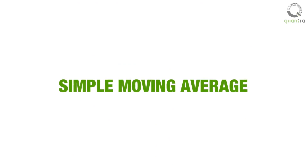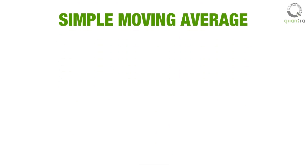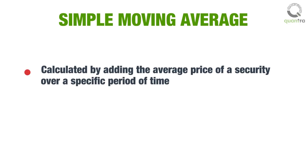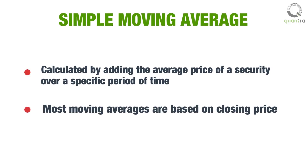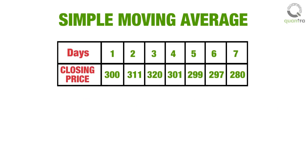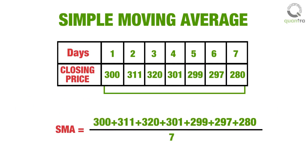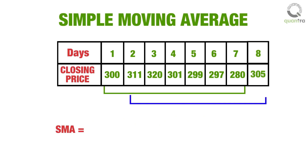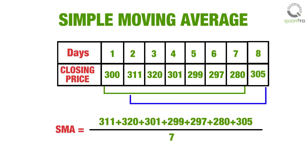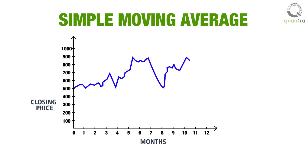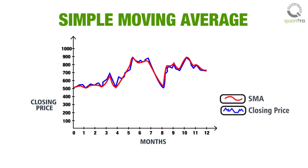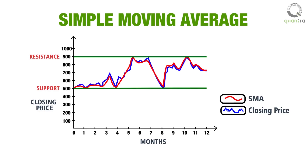A Simple Moving Average, or SMA, is a moving average calculated by adding the average price of a security over a specific period of time. Most moving averages are based on closing price. For example, a 7-day simple moving average is calculated by adding the last 7 days' closing prices and dividing them by 7, then dropping the first data point and adding the new data point to calculate the next SMA. SMA is used to identify the direction of a trend, is better for reading past price movements, and helps define support and resistance levels when analyzing stock prices.